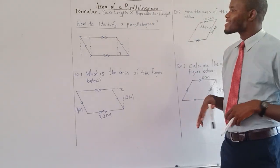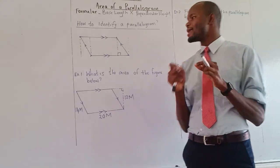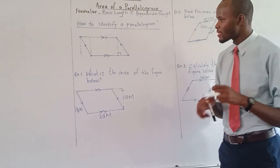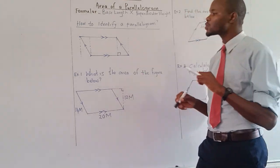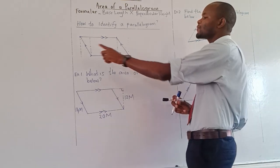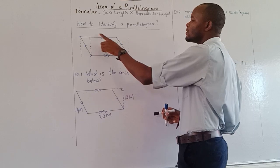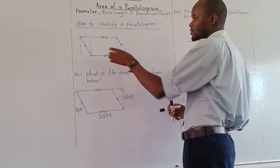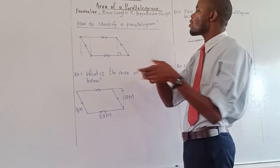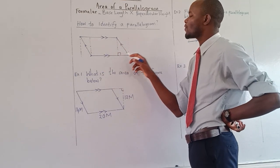Parallelogram. The first thing is you need to know how to identify this figure, which is a parallelogram. The properties you need to understand: one, it is a four-sided figure — one, two, three, four. It is also having four angles — one, two, three, four.